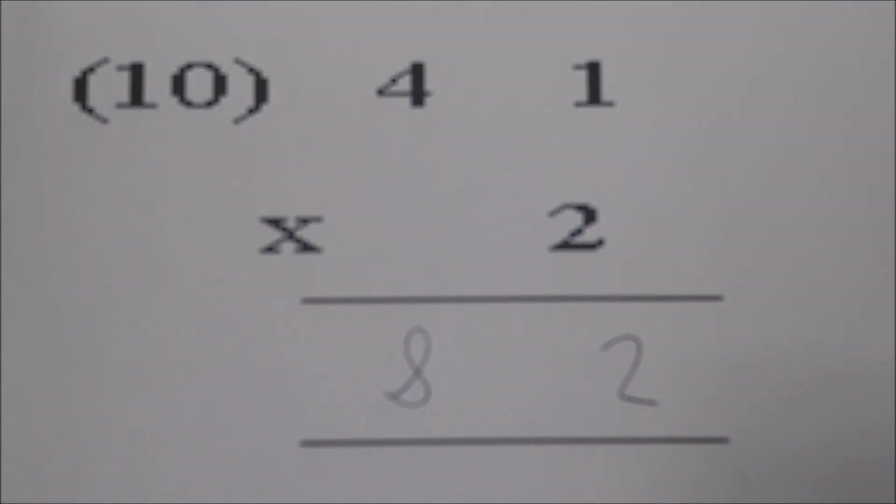Okay Sky, number ten. What are you multiplying? Forty-one times two. Go ahead and work it. Tell us what you're doing. One times two is two. And two times four is eight. Eight-two. Very good.